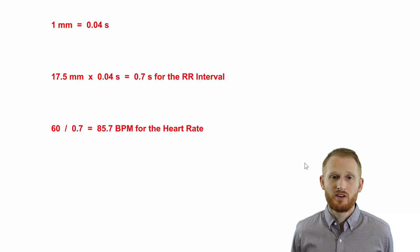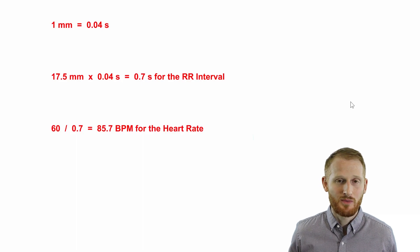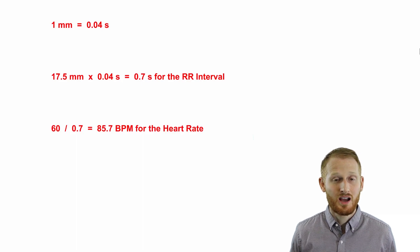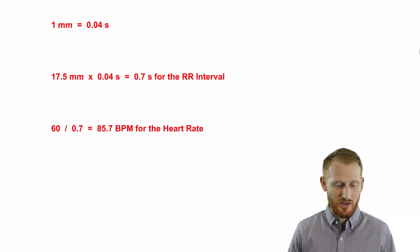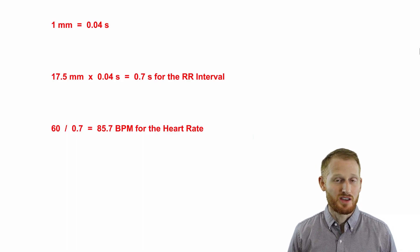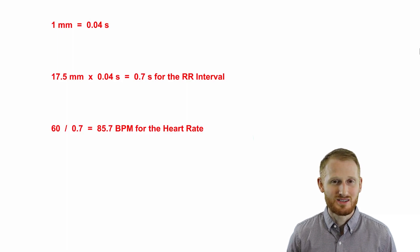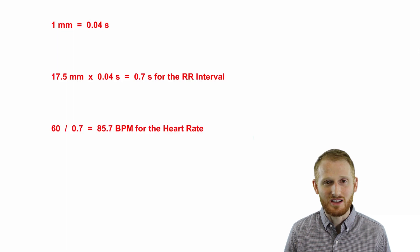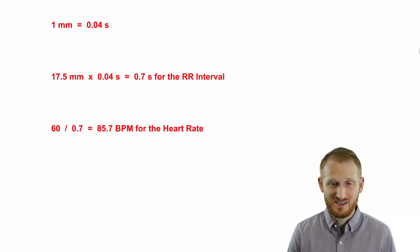It's fairly straightforward and easy to do. This is oftentimes done in shorthand ways, but this is essentially what all those different methods of calculating heart rate from an ECG are doing — just in some shorter, slightly sloppier ways. This is the most accurate way of doing it. If you have any questions, put them in the comment section below. I hope this was helpful — please come back and watch another video. Thanks.